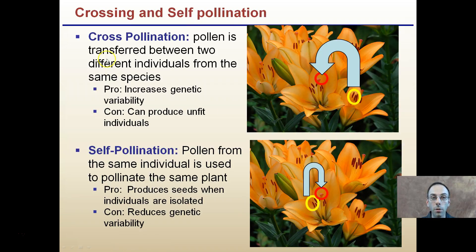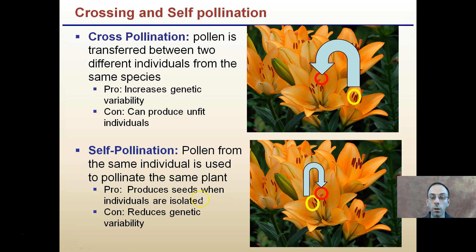We have two types of pollination. Cross-pollination is when pollen is transferred between two different individuals of the same species. The advantage is that it increases genetic variability, but it can produce unfit individuals. Self-pollination is when pollen from the same flower is used to pollinate the same plant. The advantage is that it produces seeds when individuals are isolated, though it reduces genetic variability and limits the species' ability to adapt to the environment. Both can occur and produce viable seeds.